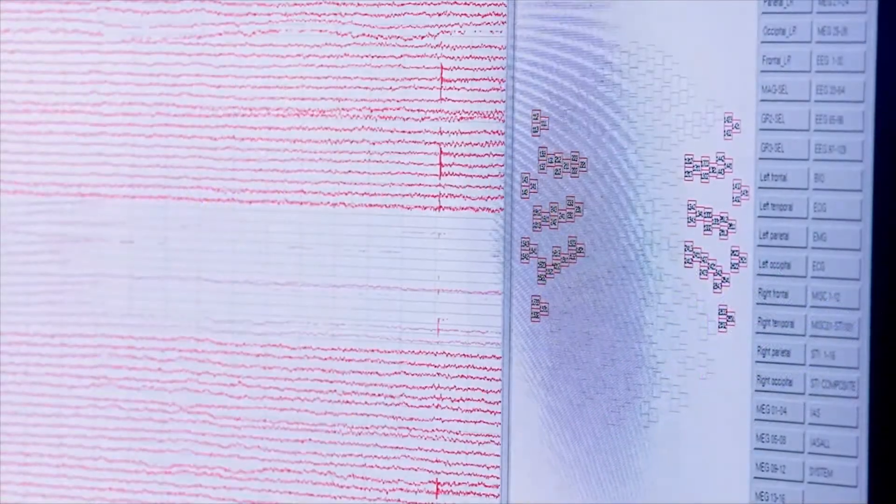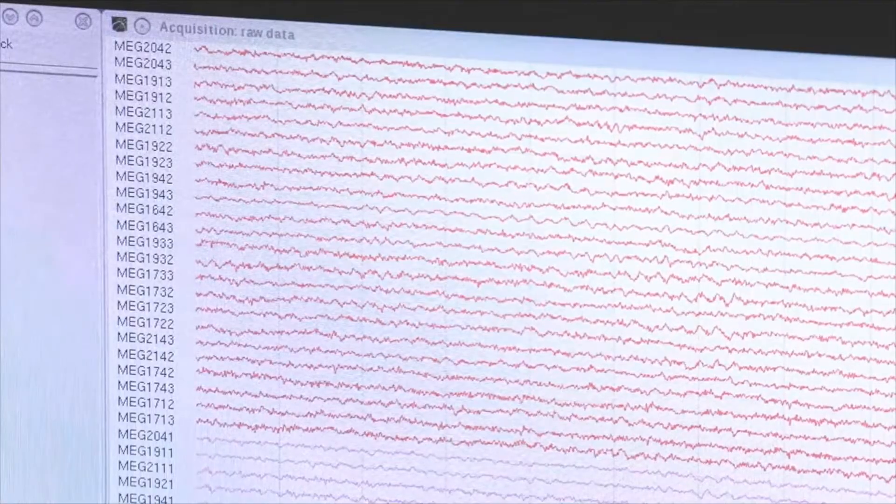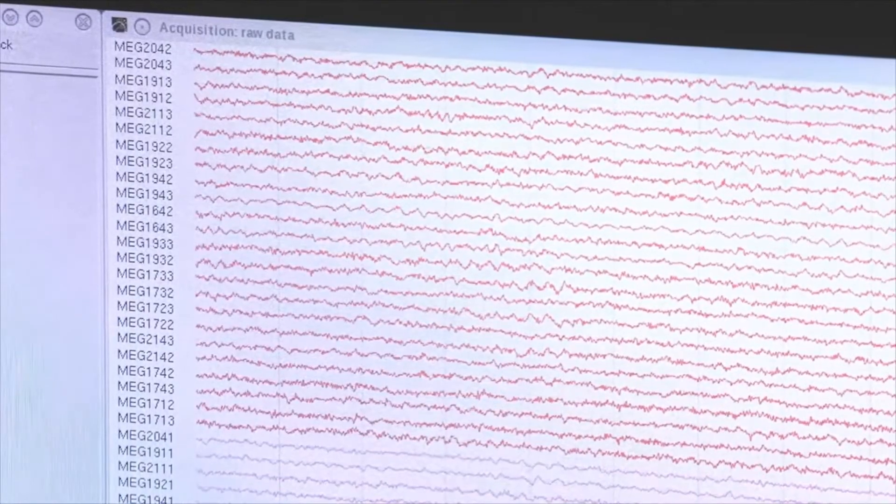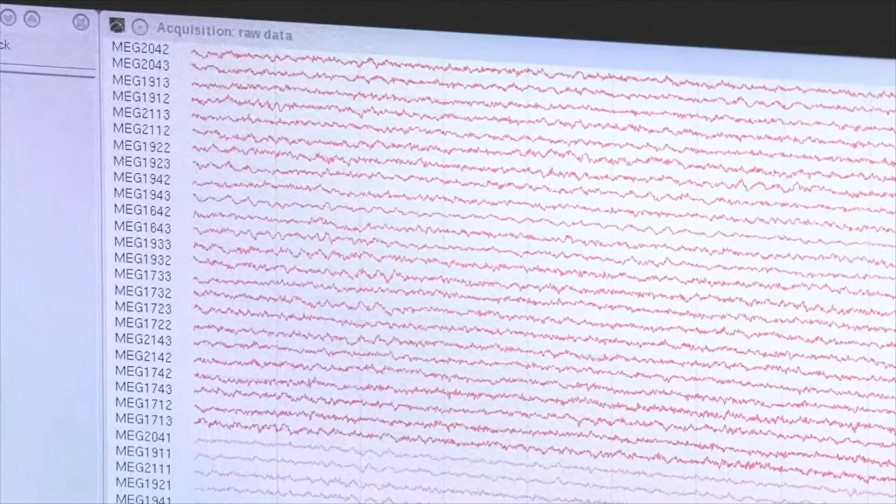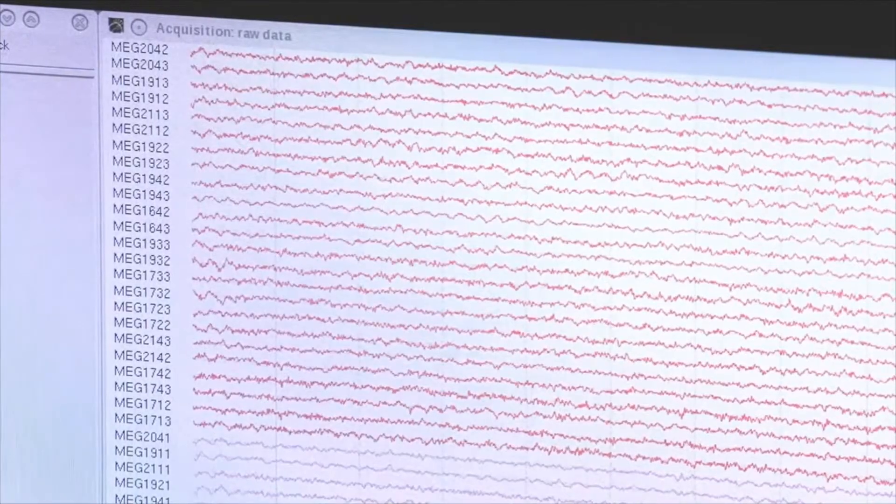The principles are quite similar to EEG. However, rather than picking up electrical signals directly, MEG looks at the magnetic properties of the charge that is created by synchronously firing neurons.